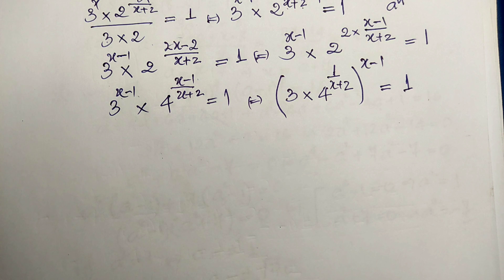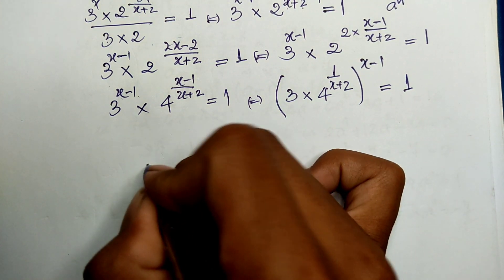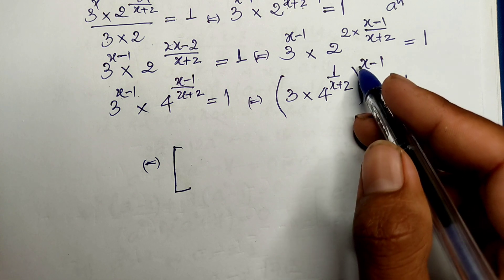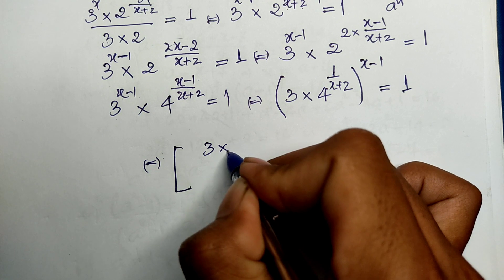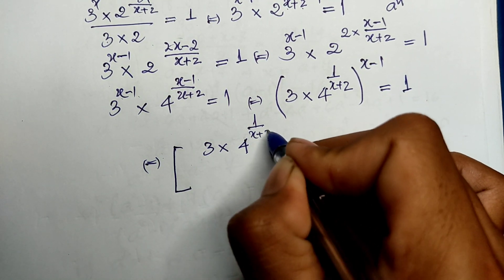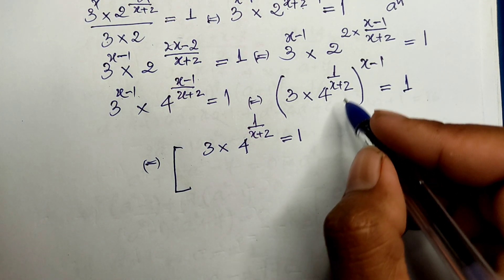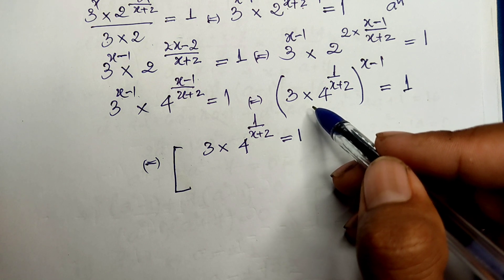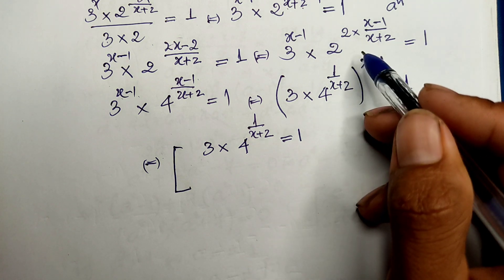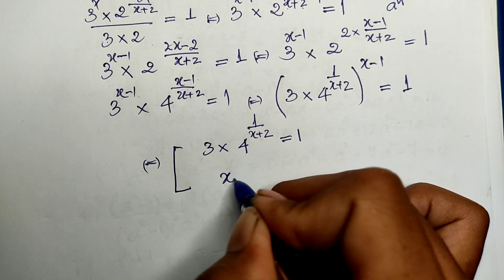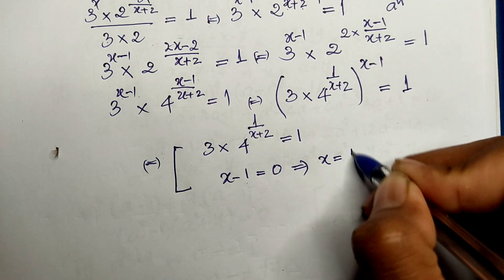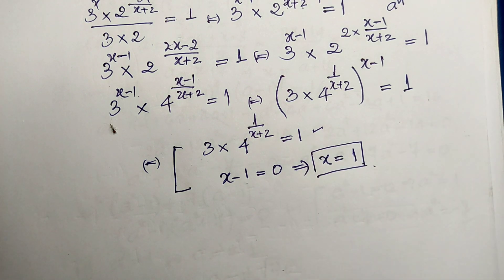Now, if this expression equals 1, either the base equals 1 or the exponent equals 0. If h minus 1 is not equal to 0, the base expression itself would need to equal 1. We can consider h minus 1 equal to 0, so any base to the power 0 equals 1. From h minus 1 equal 0, we find h equals 1. This is one solution.